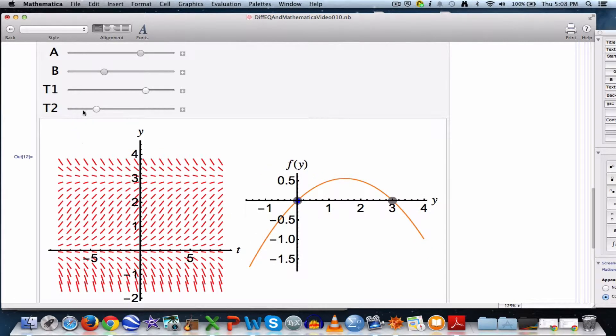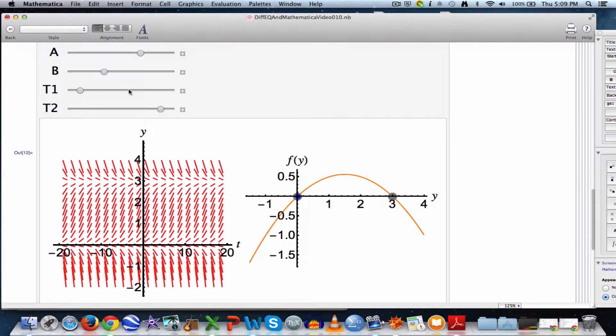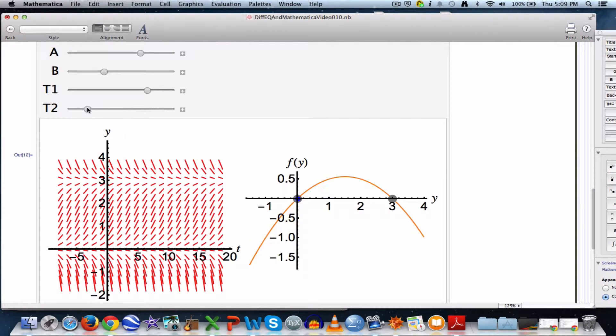t1 and t2 are the left and right endpoints for time. Now, you don't see time on the graph on the right. You just have to imagine it. But you do see t for the graph on the left, the slope field. I can make t1 smaller and t2 bigger to change that graph as well. I'll also go back to the defaults on that one.